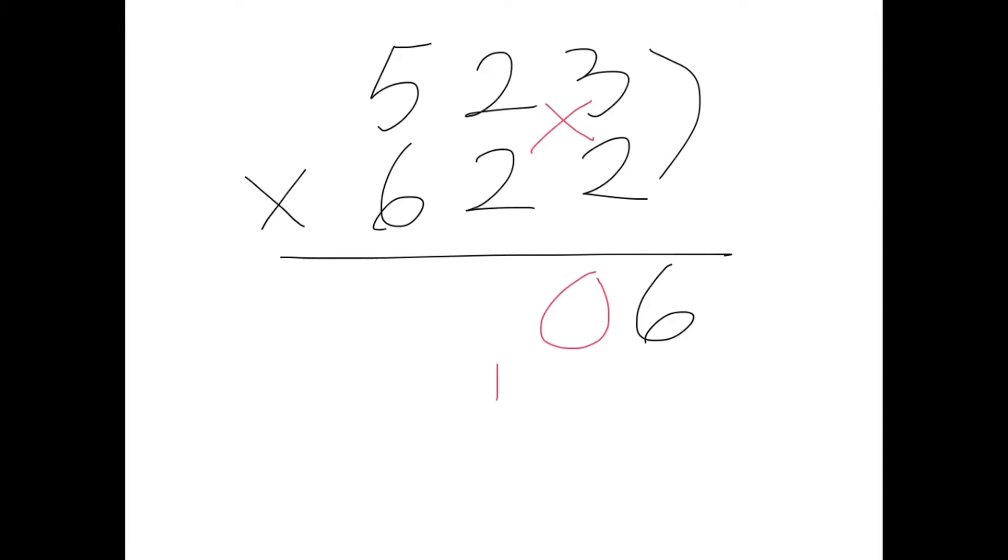Next, the hardest part is 6 times 3 plus 5 times 2 plus 2 times 2. So that's going to be 10 plus 18, 28, and plus 4, 32. Add this one here, 33. Carry over the 3.